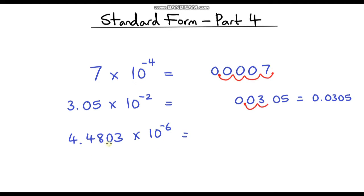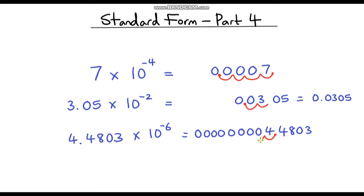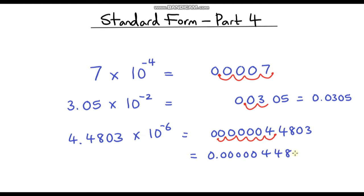Let's go through one more example: 4.4803 times 10 to the negative 6. So I'm going to write down our base number and put some zeros in front of that 4 — we'll need quite a few because we've got a power of negative 6. Now we're going to move our decimal point, which starts here, backwards six times: 1, 2, 3, 4, 5, 6. So our answer is 0.0000044803.